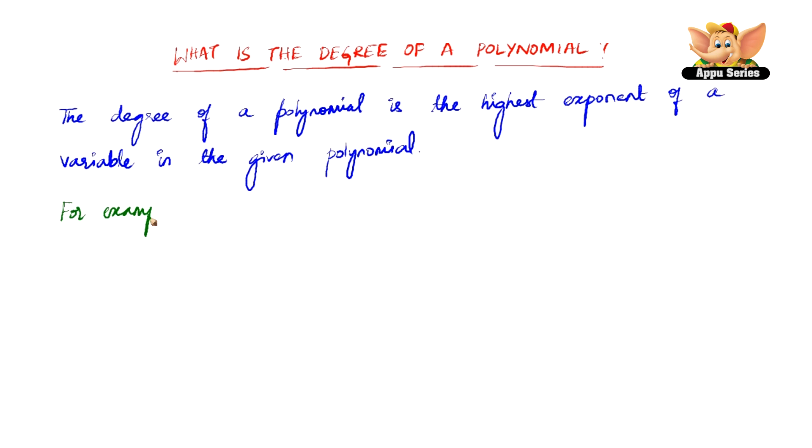For example, 2x squared plus 3x. Here, the highest exponent is 2. Therefore, 2 is the degree of this given expression.